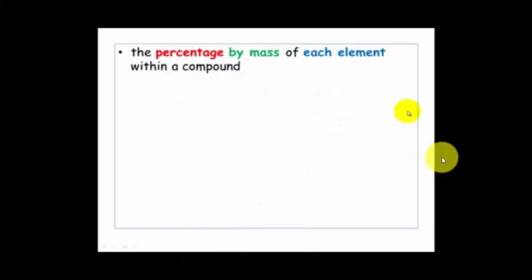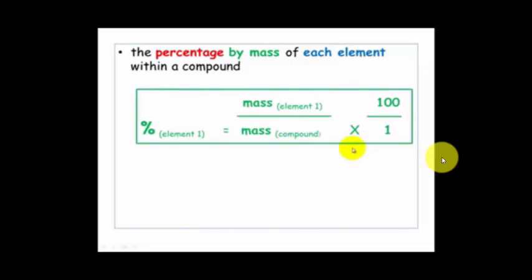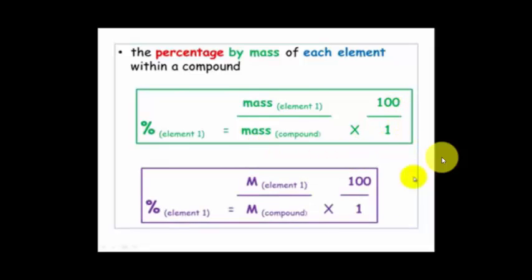Percentage composition works out the percentage by mass of each element within a compound. It can be worked out just as you work out any other percentage: take the mass of the element, divide it by the total mass of the compound, and multiply by 100. Because we don't need the actual mass, we can use molar mass — the mass of one mole of that element.